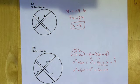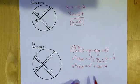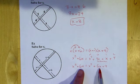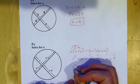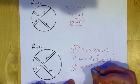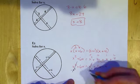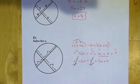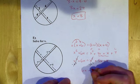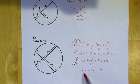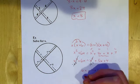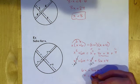I still have like terms not on the same side — the 6X and 5X and the X squareds. I'll subtract X squared from both sides, which conveniently eliminates the X squareds entirely. That gives 6X equals 5X plus 4. Subtracting 5X from both sides: 6X minus 5X is 1X, so X equals 4.